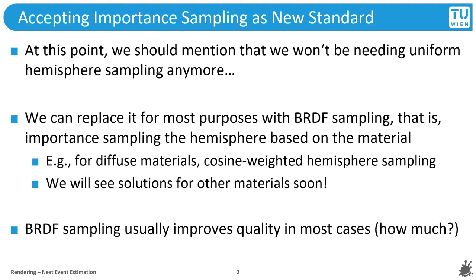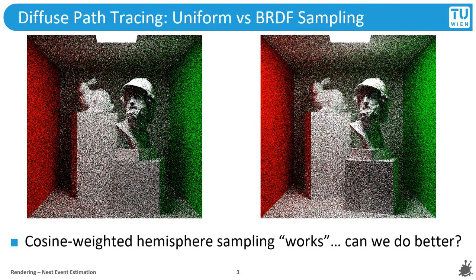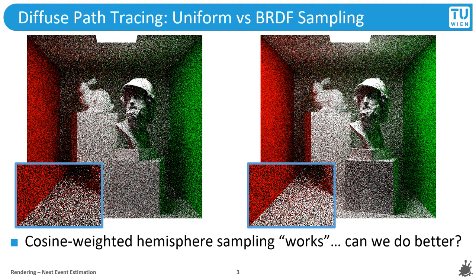However, even when we use BRDF sampling, the quality of images that we construct in an acceptable amount of time — like a minute or less — can leave a lot to be desired. Consider this scene, for instance, where we compare uniform hemisphere sampling to BRDF sampling, or cosine weighted hemisphere sampling in this case, because we only have diffuse materials here. The difference is there but it is rather subtle, since the difference between a uniform and a cosine weighted sampling distribution is not that big.